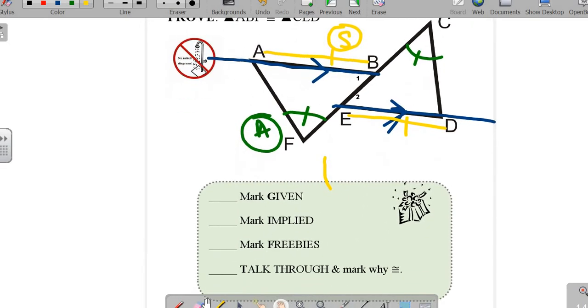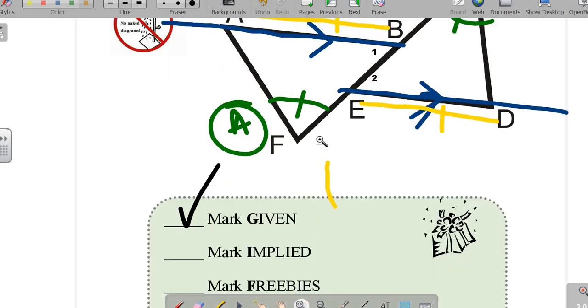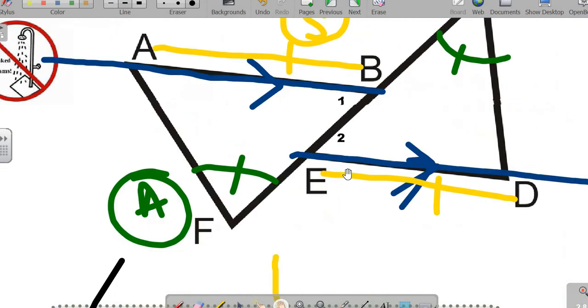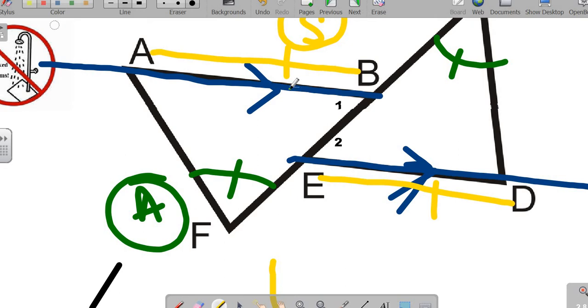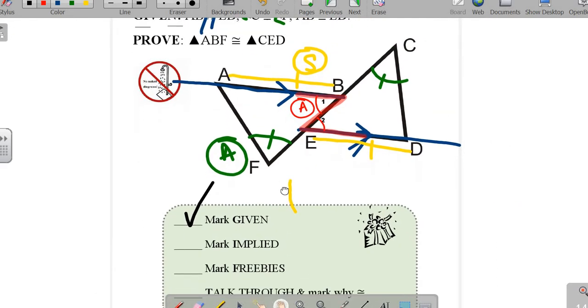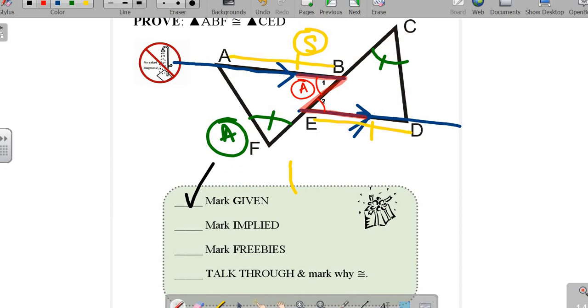We're trying to prove why are these triangles equal. Given, I've marked the given already on the diagram. What's implied here? Because of the parallel lines, we get armpits of the Z going on here. That's implied. So I have a pair of angles. There are no reflexive sides here. There are no vertical angles here. So, freebies.